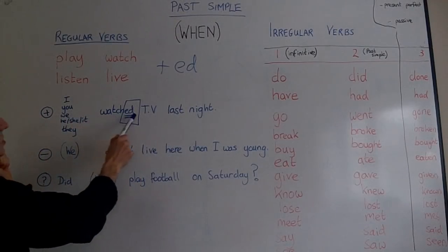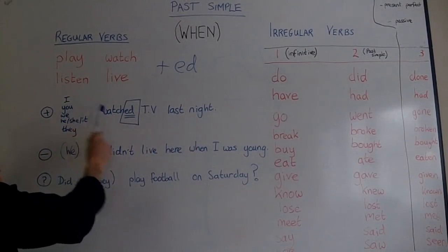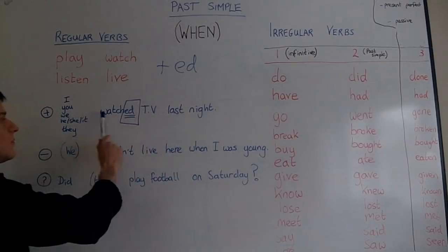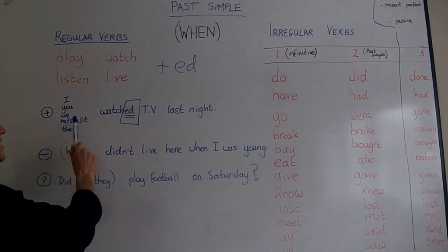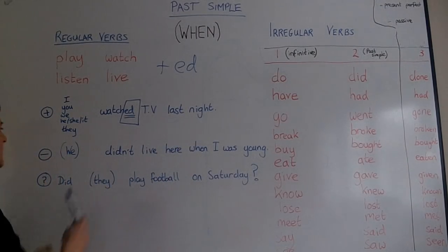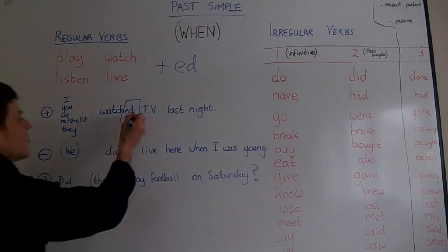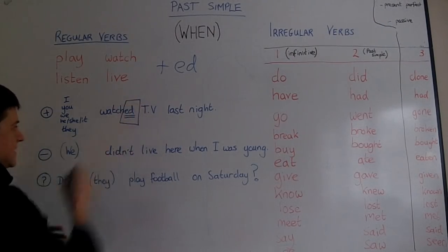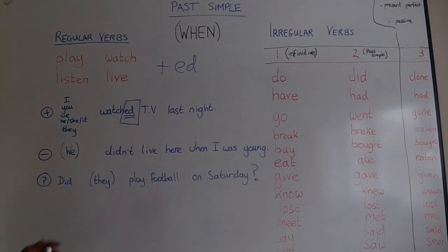I watched TV last night. You watched TV last night. We watched TV last night. He, she, or it watched TV last night. They watched TV last night. It's always just plus ED in positive forms.